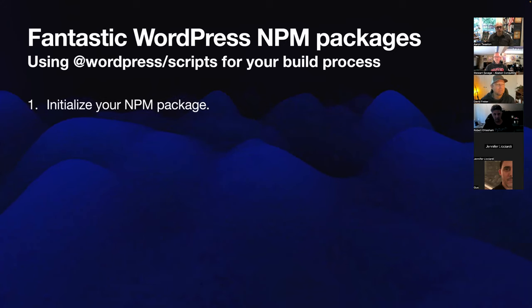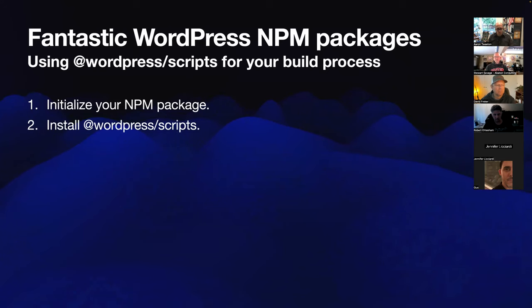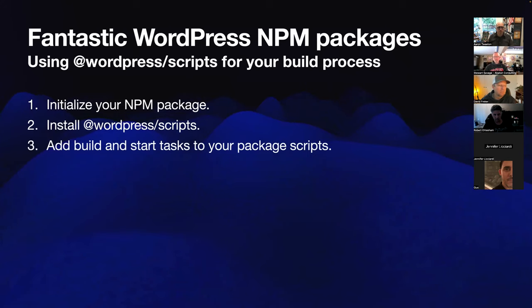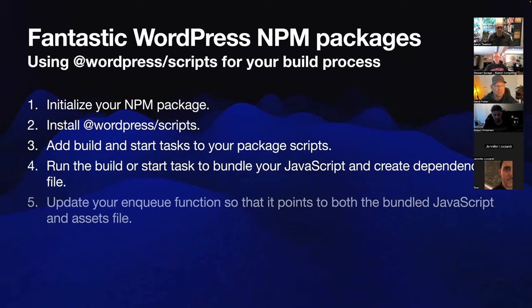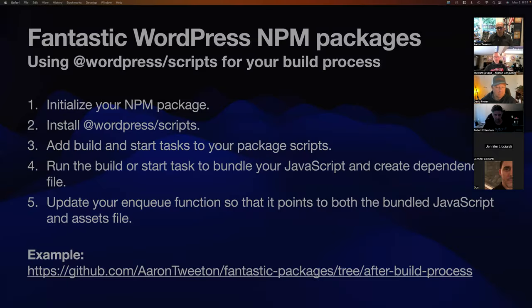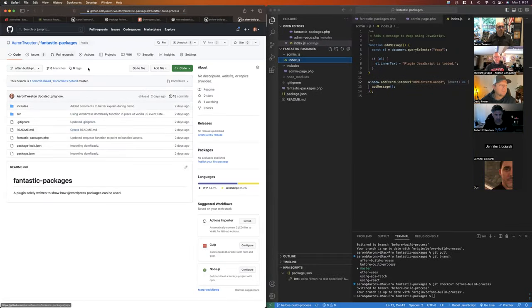The first thing to do if you're going to use WordPress scripts is make sure you've initialized your NPM package. You need to install WordPress scripts, add build and start tasks to your package scripts, run the build process to create dependency files, then update your enqueue function so it points to both the bundled JavaScript and the assets file. I'm going to switch over to VS Code right now.